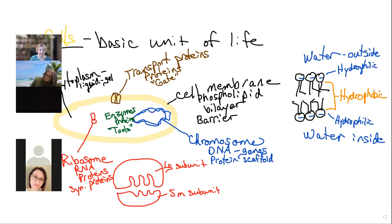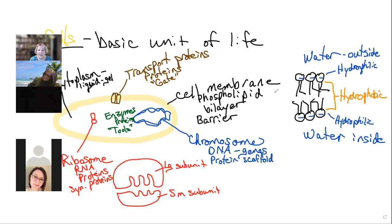All cells have these parts. If you don't have these parts, you're not a cell. But the really defining characteristic is the cell membrane — you've got to have a barrier between the outside and the inside. Any questions on what a cell is and what the essential parts are? What about the mitochondria?